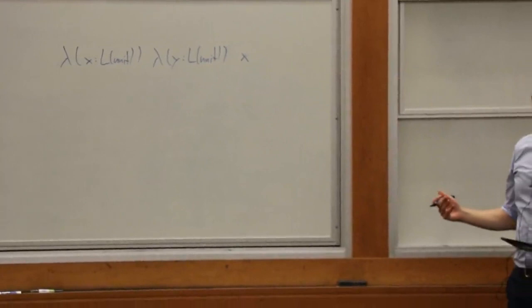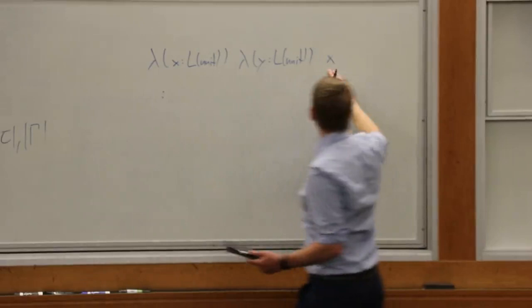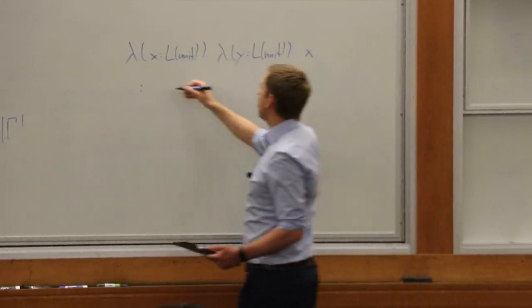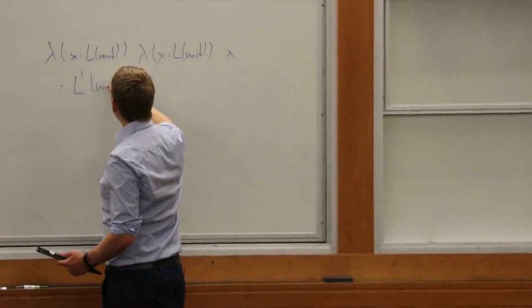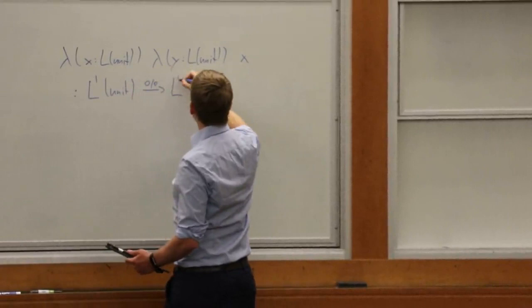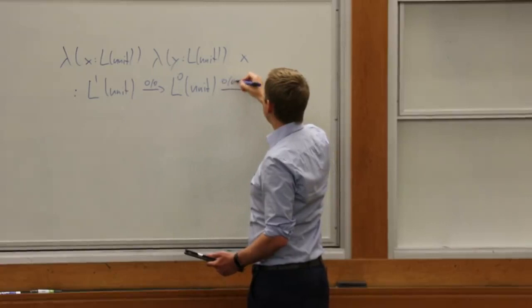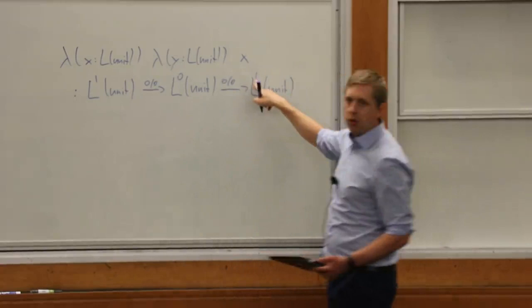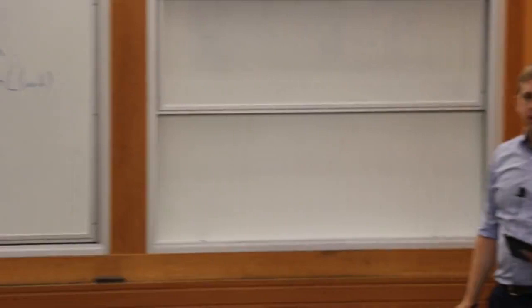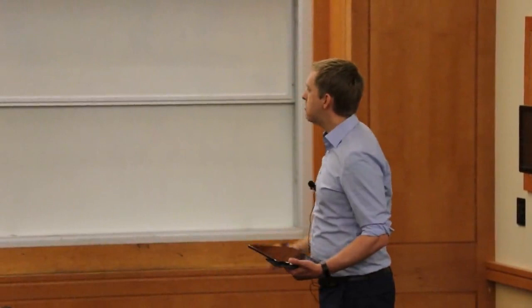The type you really want to give it is something like this — you're in a context where you might later perform some computation on x that costs something. So the type you'd like to give it, but which is not possible, would have some potential on the first list x, say zero on the other, and you'd want potential one coming out because you don't do anything with x, you just pass it along. That should be possible, but is prohibited by the rule.